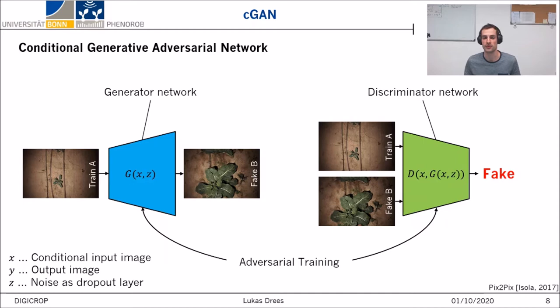This is crucial because we don't want to generate just any random arbitrary plants — the shape of the generated plant should depend on what it looked like in the past. In other words, the condition we are inserting is a previous growth stage of the generated plant. While both networks are very poor at the beginning, they will improve step by step through adversarial training with training image pairs. For more details regarding the architecture and the whole training process, I would really like to answer your questions afterwards. Please also have a look at the Pix2Pix image-to-image translation architecture on which our methodology is based.